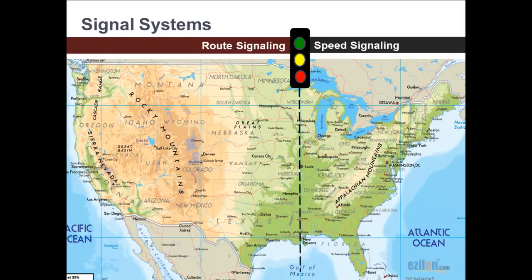There exist today two fundamentally different approaches to signaling in the United States. Route signaling is typically in the West, predominantly with UP and BNSF. Speed signaling is typically used in the East with CSX, NS, Amtrak, and the commuter railroads in the Northeast. There are certainly some exceptions to these generalizations.